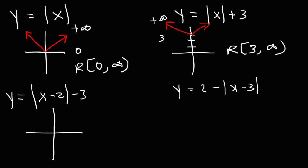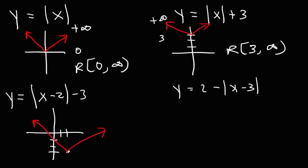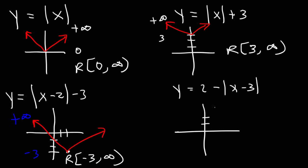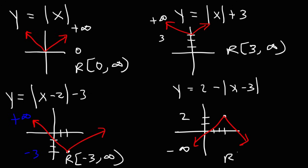For y equals the absolute value of (x minus 2) minus 3, it's shifted 2 units right and 3 units down, still opening upward. The lowest y value is negative 3 and the highest is infinity, so the range is from negative 3 to infinity. For the last one, shifted up 2 and right 3 with a negative sign in front of the absolute value, it opens downward. The highest y value is 2 and the lowest is negative infinity, so the range is negative infinity to positive 2.